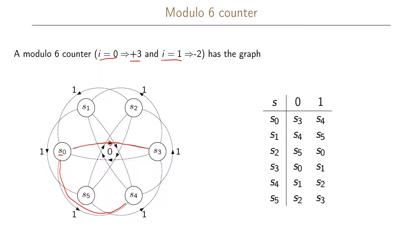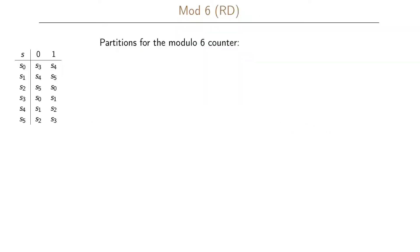Looking at the state transition graph, we can see it is symmetric in a sense, and this is something we can take advantage of in our reduced dependency algorithm. The best approach is to first write our state transition table, listing for each state which state we go to with a zero input and with a one input, enumerating this for all states.